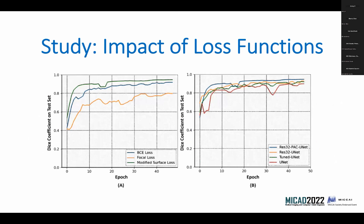The second slide has two plots. The left plot compares different loss functions over epochs, showing the dice coefficient on the test set. The modified surface loss generalizes the quickest — in less than 10 epochs it reaches nearly 90% dice coefficient on the test set. The right-hand plot compares different networks in the study. The RES32-PAC unit, which is the main proposed model, generalizes the fastest, followed by the RES32 unit — the same architecture without the PAC module on the skip connections. We also compared against baseline models: tuned U-Net and U-Net.